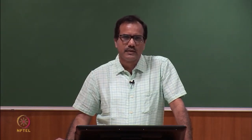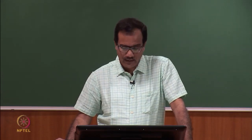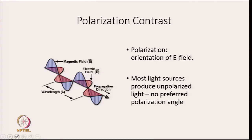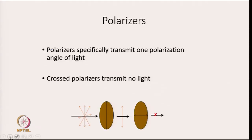Contrast can be achieved with polarization. The first thing we need to know is polarization — this is the orientation of the electric field. Most light sources produce unpolarized light, which means it does not have a preferred polarization angle. Here is your electromagnetic wave, and as we discussed during our initial lectures, there are two fields — magnetic and electric — which are orthogonal to each other, and what we are concerned about is the orientation of the electric field. What polarizers do is they specifically transmit one polarization angle of light.